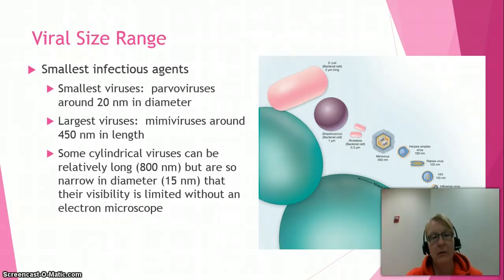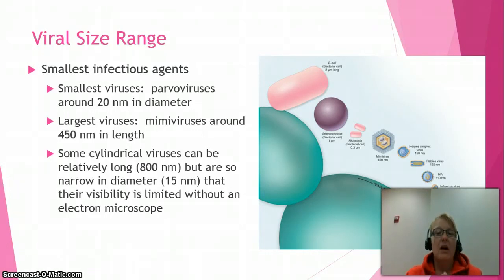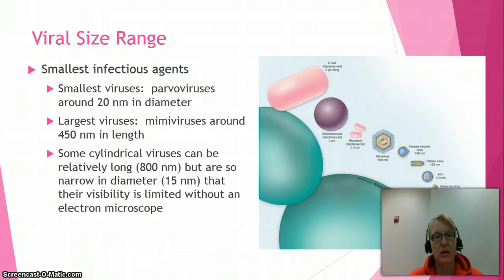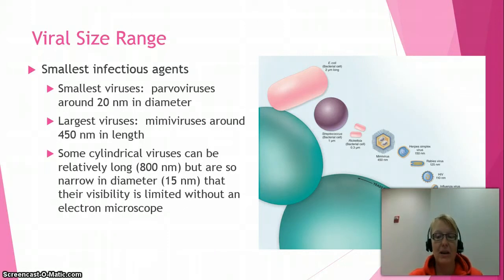Before we go too far down the road of virus structure, let's remind ourselves about viral size range. Viruses are the smallest infectious agents — unless you want to talk about prions, but we'll cover that later. The big green cell in this picture is a yeast cell, with three examples of prokaryotic cells above it. Notice how much smaller prokaryotes are than eukaryotes. Now look at all the different viruses shown and how much smaller they can be. Yellow fever virus is 22 nanometers across — really, really small. Also take a moment to check out the different shapes they come in, because we're going to talk about those as well.